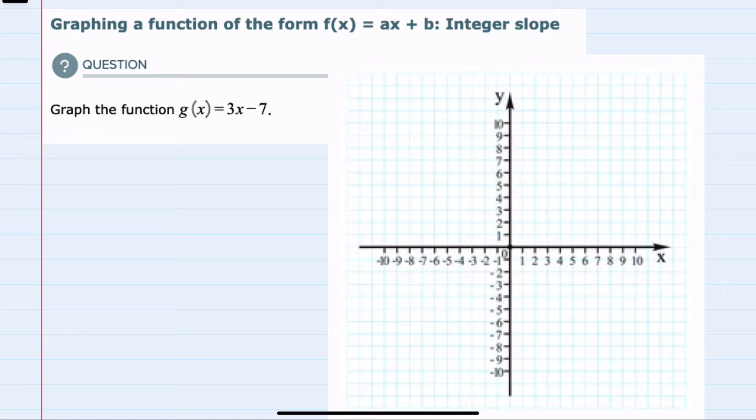Since it is in slope-intercept form where the y-intercept b is -7, I'll start on the graph by placing a dot on the y-axis where y equals -7.